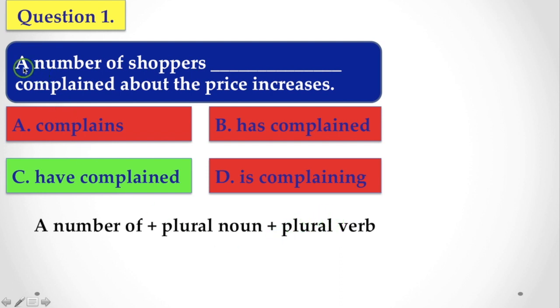Let's see here. Here we find a number of and the shoppers, this is a plural noun. So the verb must be plural. Here, have complained. This is the rule.